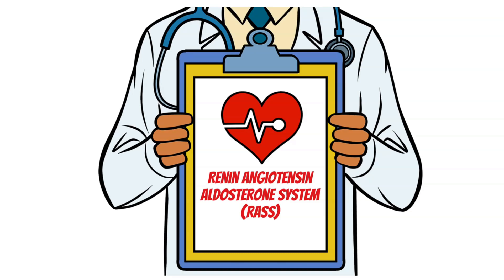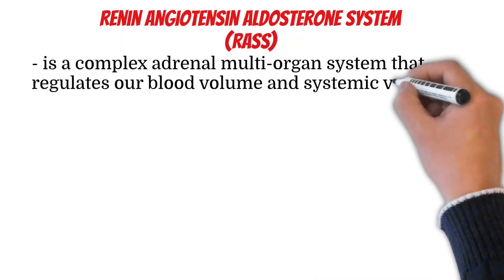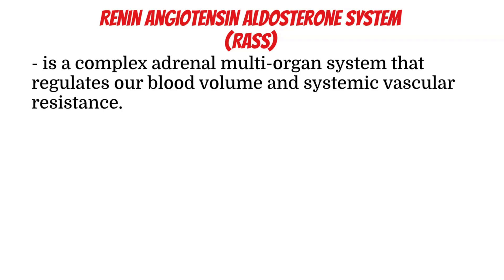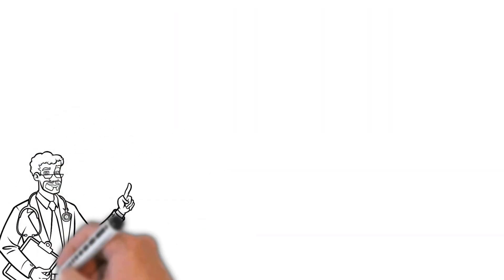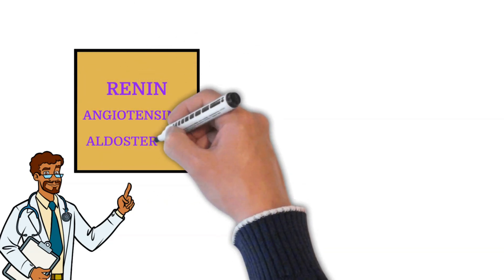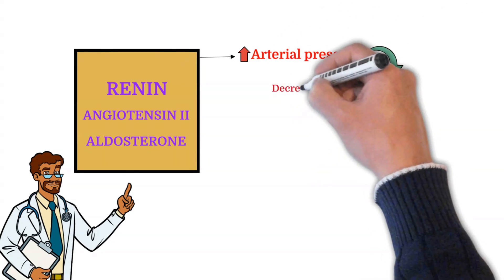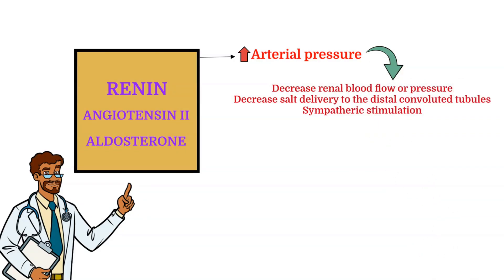The renin-angiotensin-aldosterone system is a complex, multi-organ system that regulates our blood volume and systemic vascular resistance. While the baroreceptor reflex responds in a short-term manner to decrease arterial pressure, the RAS is responsible for more chronic alterations. There are three compounds involved: renin, angiotensin-2, and aldosterone. These three act to elevate arterial pressure in response to decreased renal blood pressure, decreased salt delivery to the distal convoluted tubule, and sympathetic stimulation or beta-agonism. Through this mechanism, the body can elevate blood pressure in a prolonged manner.